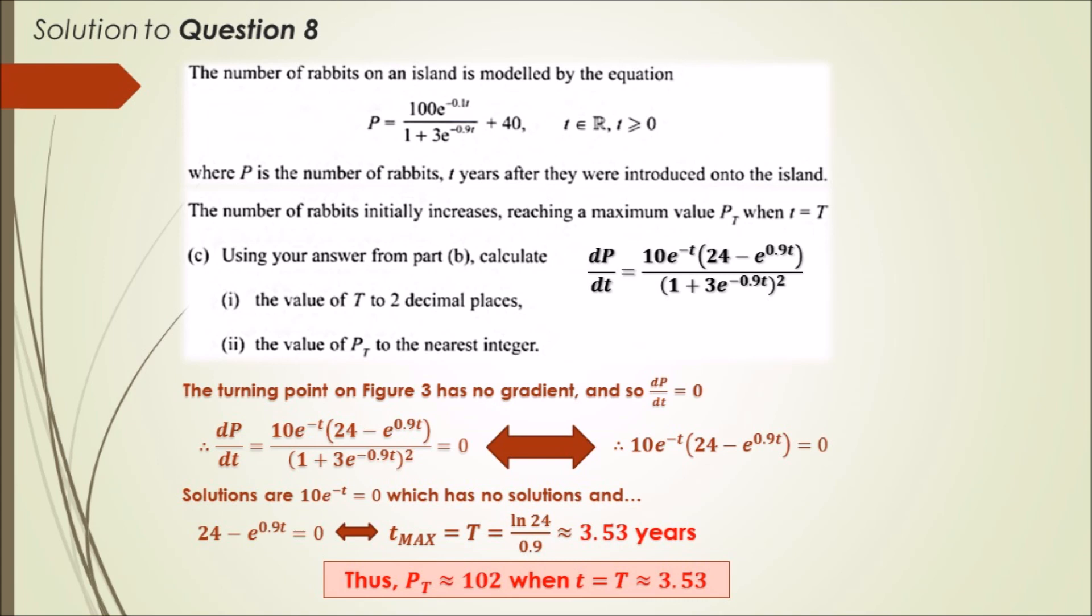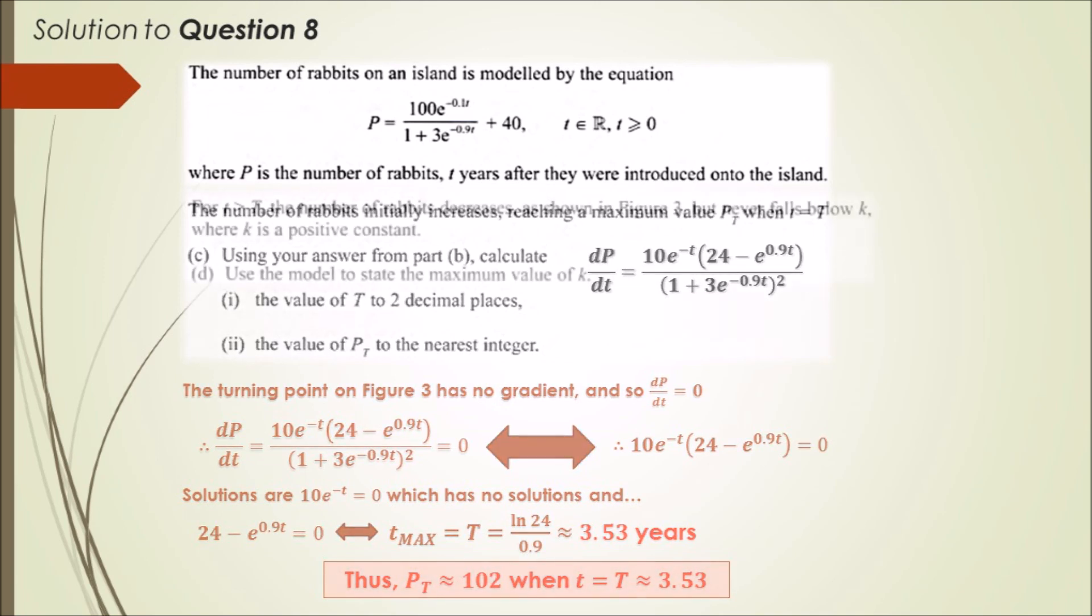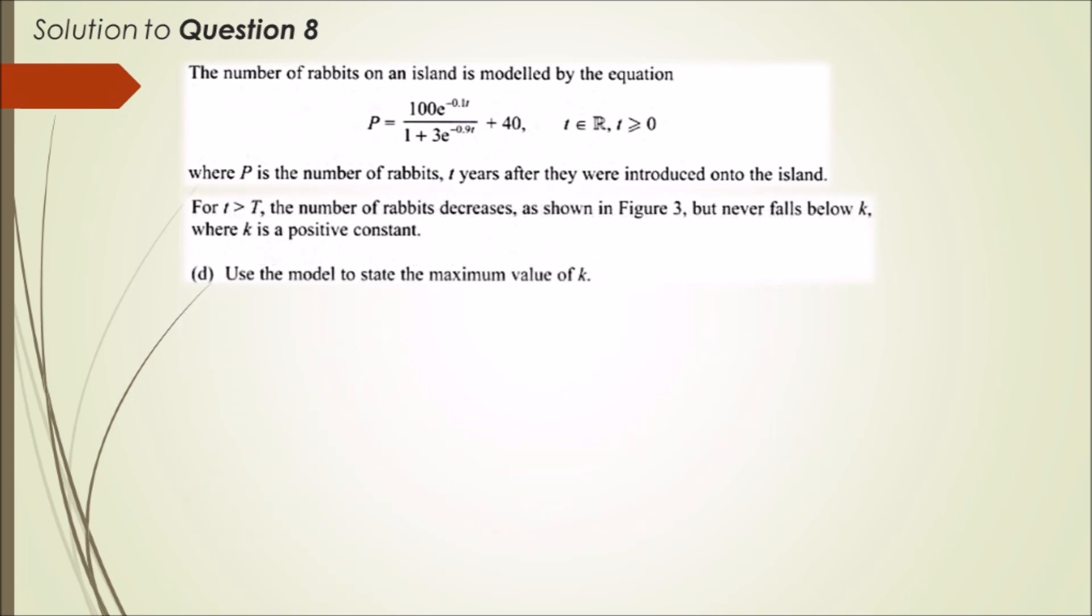Can you guys check that for me? These are model answers, but the methodology should be fine. Now let's wrap up with Part D. Part D should be quite easy. It's saying use the model to state the maximum value of k. We know that as time progresses after capital T, the number of rabbits decreases to k.